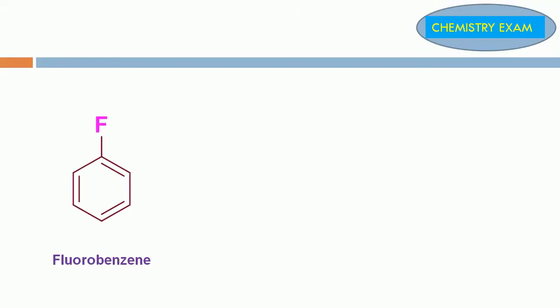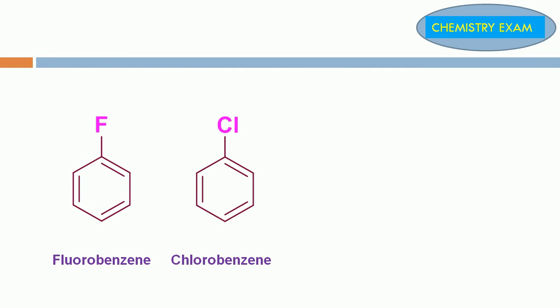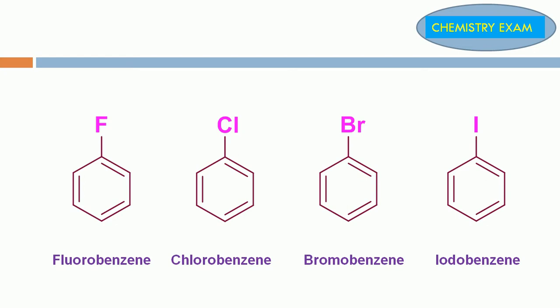F substituted benzene is called fluorobenzene. Cl substituted benzene is called chlorobenzene. Bromine substituted benzene is called bromobenzene. Iodo group present in benzene is called iodobenzene.